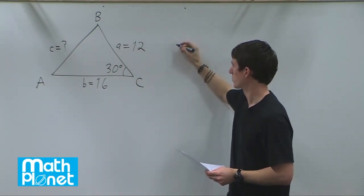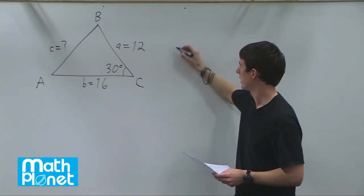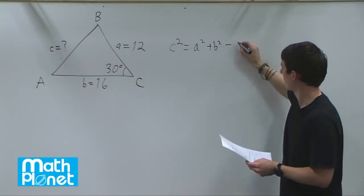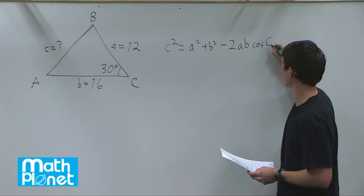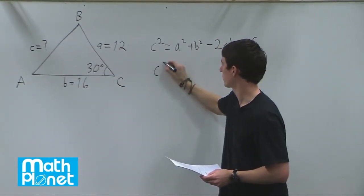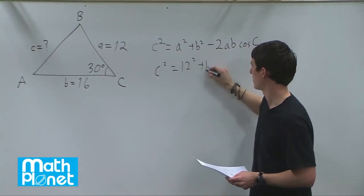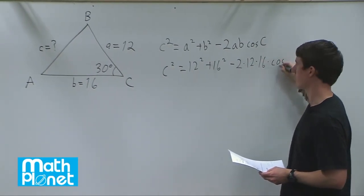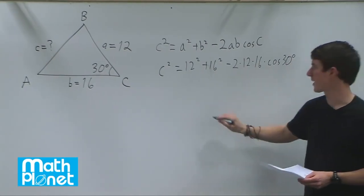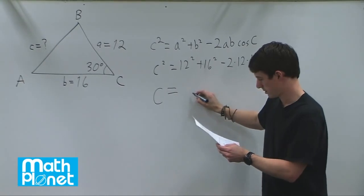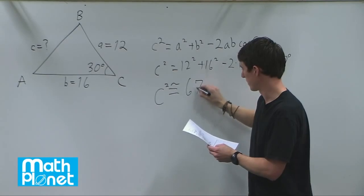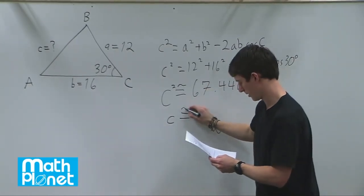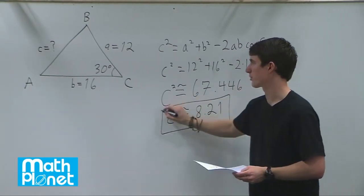The law of cosines states: c squared equals a squared plus b squared minus 2ab times cosine of angle C. Plugging in our values, c squared equals 12 squared plus 16 squared minus 2 times 12 times 16 times cosine of 30 degrees. Working this out, c squared is approximately 67.446, so c equals the square root of that, which is approximately 8.21. That is our final answer for length c.